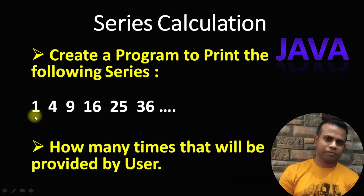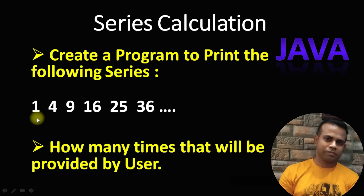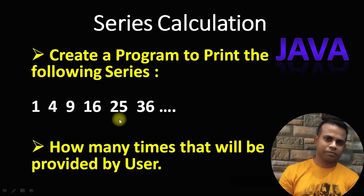Looking at this series: the first time we print 1, second time 4, third time 9, fourth time 16, and so on. If you analyze it — the first time we print 1 squared which is 1, second time 2 squared is 4, third time 3 squared is 9, fourth time 4 squared is 16. So this series is nothing but the square of each iteration number.